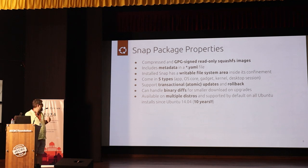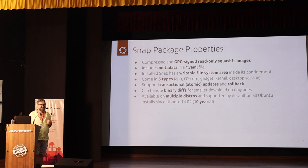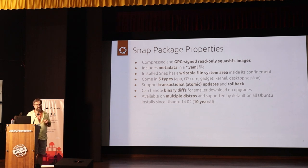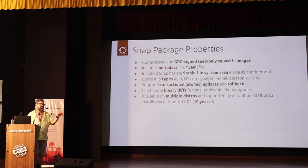The five snap types are: apps (simply applications); operating system core snaps, which contain basic libraries like libc and glibc so snaps can share these; gadget snaps, which contain a boot system and filesystem description so an all-snap OS can boot; kernel snaps; and desktop session snaps. Desktop session snaps are KDE or GNOME — these are what make up an all-snap desktop distribution.